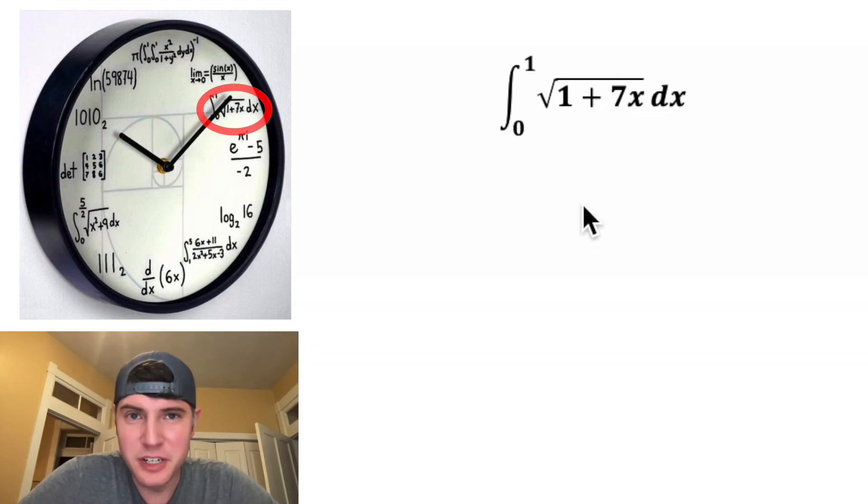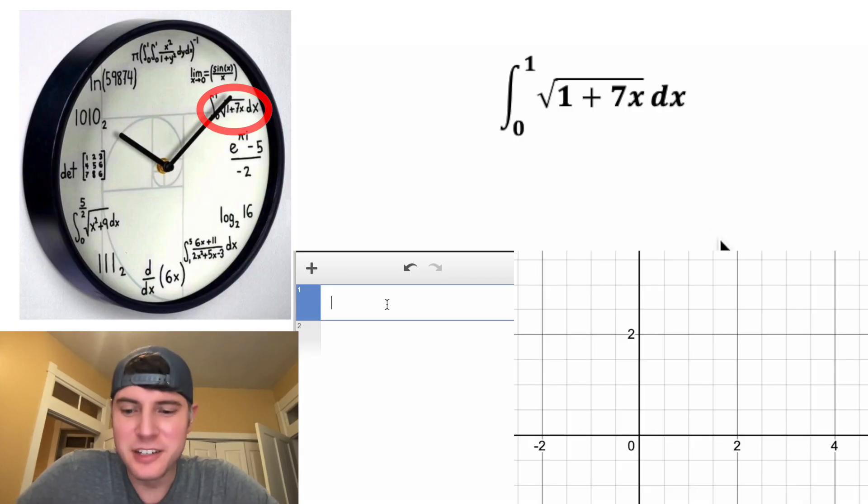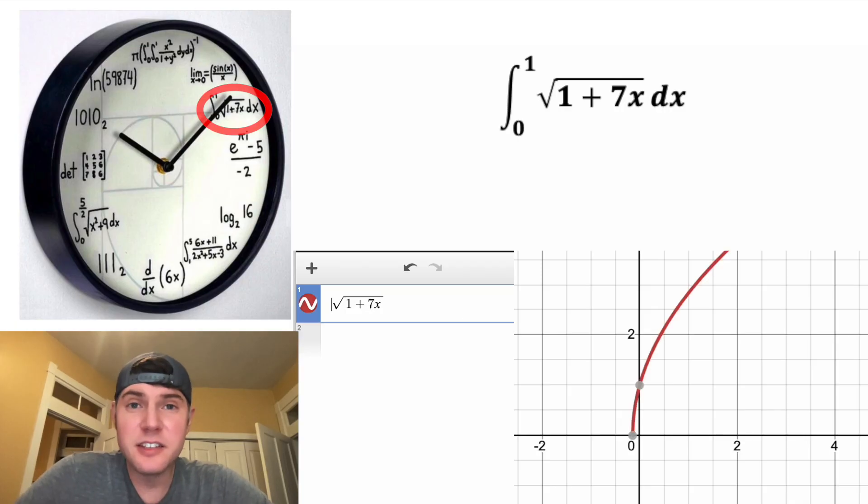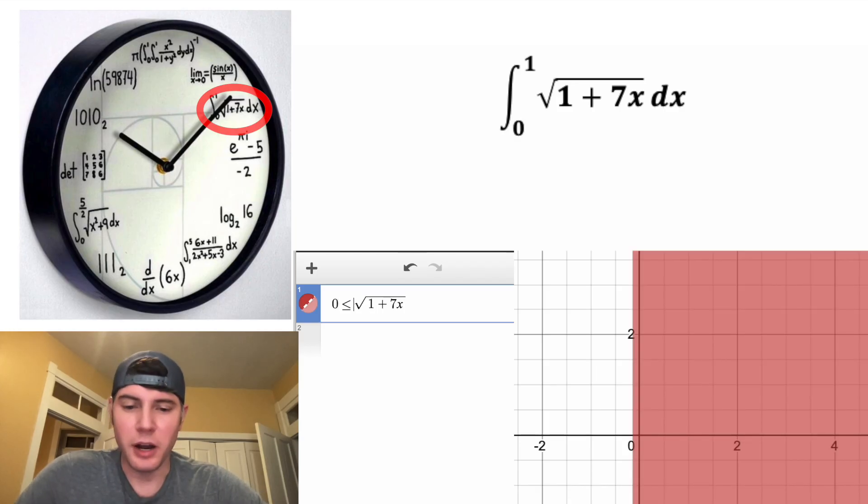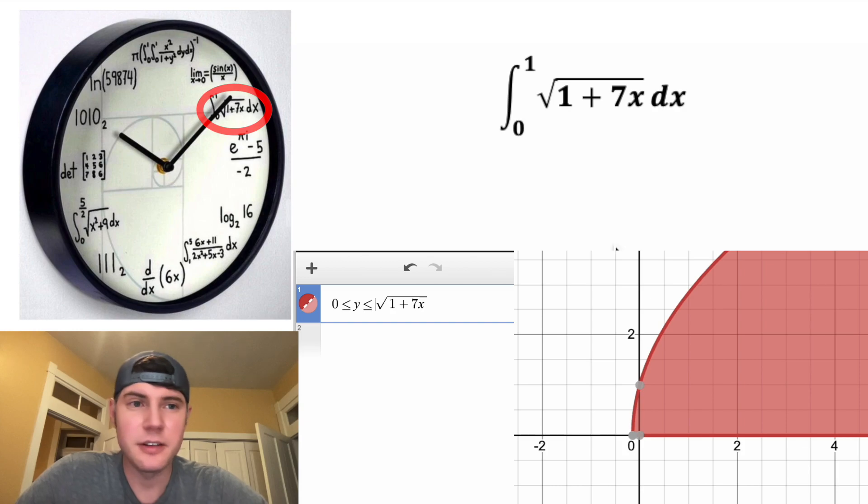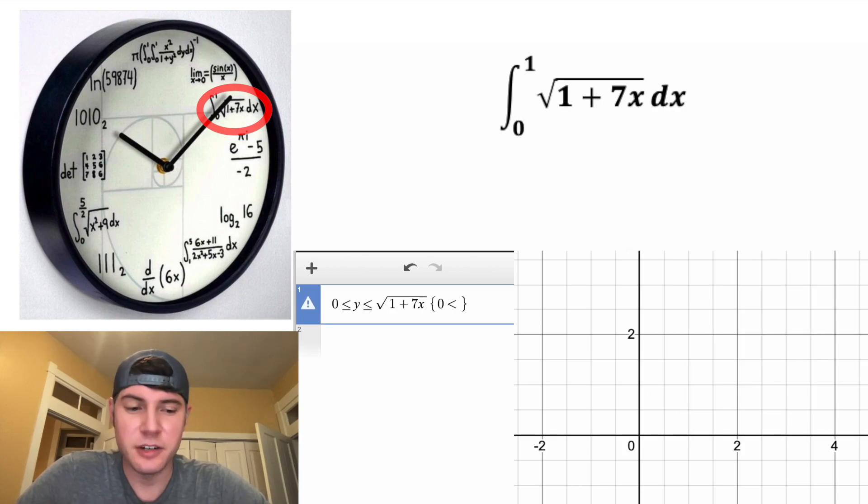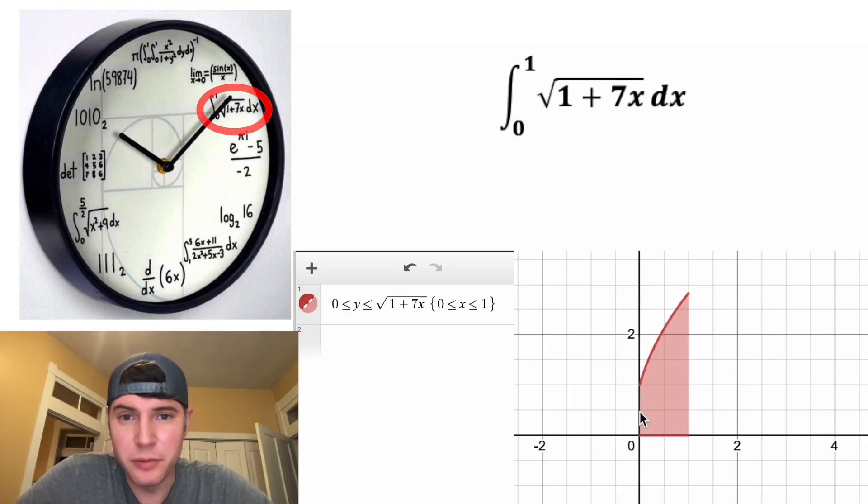Next, we have the integral from zero to one of the square root of the quantity one plus seven x dx. So let's go back to Desmos. Let's type in the square root of one plus seven x, and then since it's an integral, we want the area between it and the x-axis. So we'll say zero is less than or equal to y is less than or equal to it. And the limits of integration are zero to one, so we're only interested in zero less than or equal to x less than or equal to one. We're interested in the area of this red region right here.